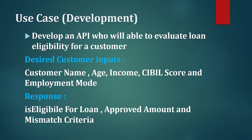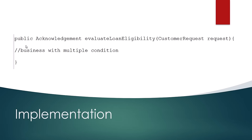Let's discuss the use case we are going to develop today. We are going to develop an API that will evaluate loan eligibility for a customer, where the customer needs to provide input as name, age, income, civil score, and employment mode. It will return the response as: is the customer eligible for a loan or not, the approved amount for the loan, and the mismatch criteria — the input fields that did not meet the criteria to get the loan.